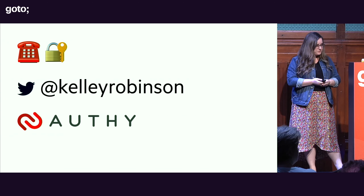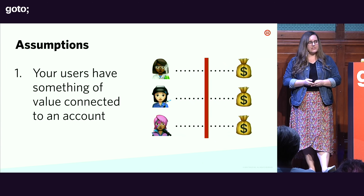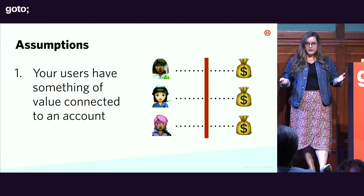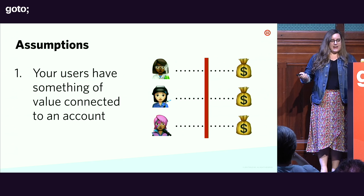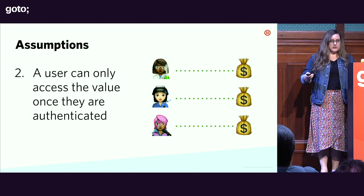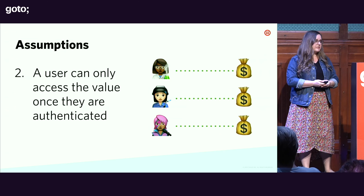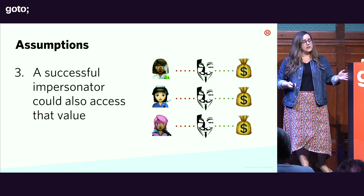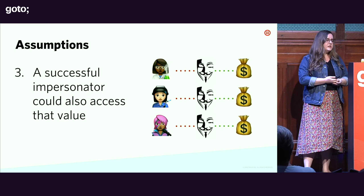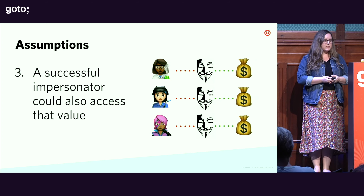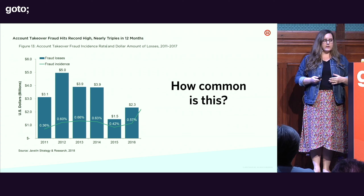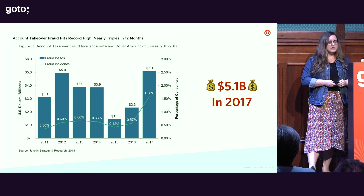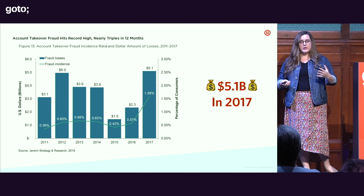When it comes to identity and verification, users have something of value tied to an account, and you can't access that unless you authenticate them. But there's also the assumption that an impersonator could access that value if they can successfully impersonate someone. This is a big problem — account takeovers affected a lot of people globally, and in 2017 this was a $5.1 billion problem, which is why European regulators started to take notice.